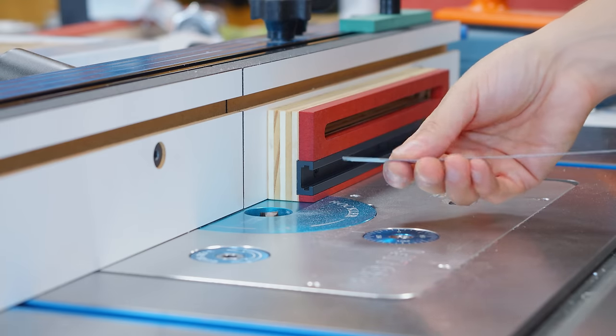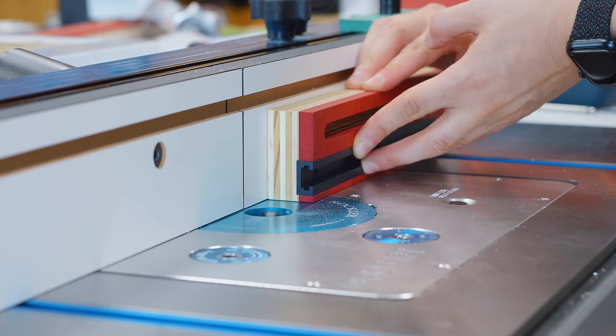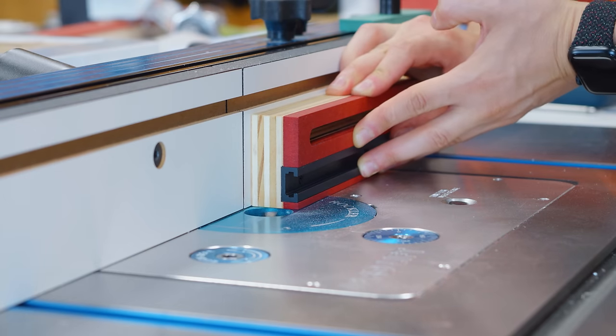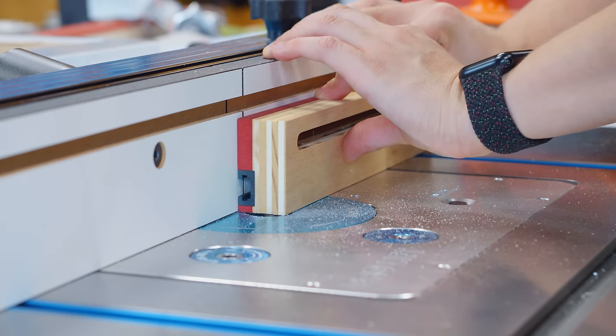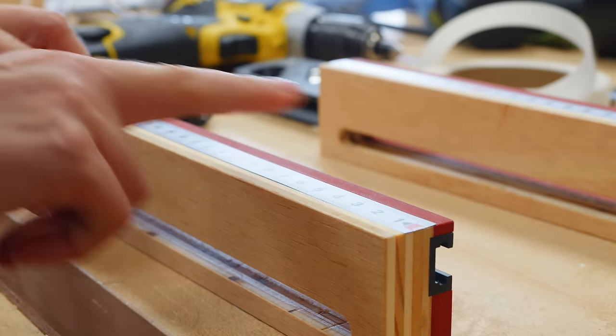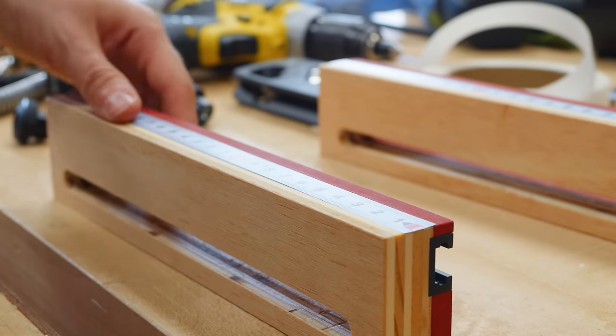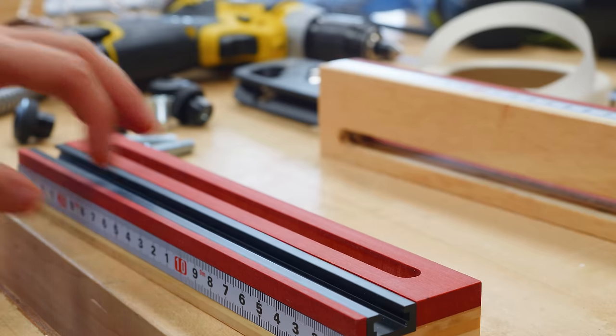The last detail I did was to install sticky measuring tape to the fence. It's metal and it has some thickness so I routed a very shallow dado to make it flush with the surface. And it's finally complete!